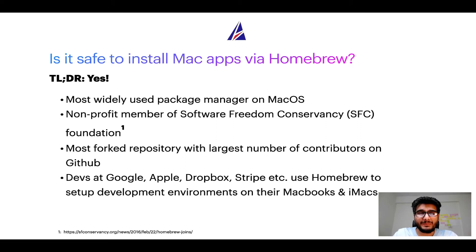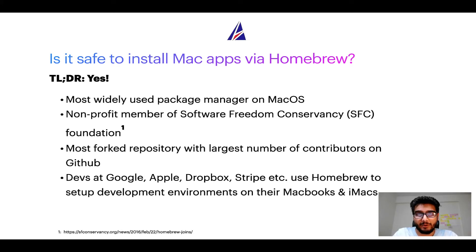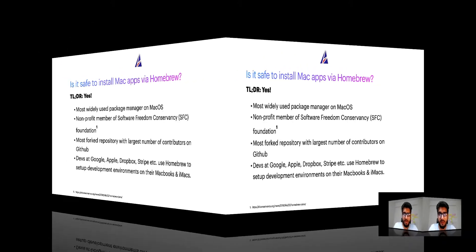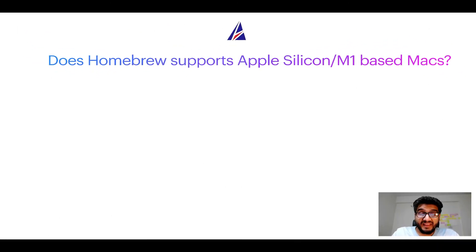Also, you might be surprised to know that Homebrew is the most forked project on GitHub and it has the largest number of contributors on its GitHub repository. Many devs at organizations like Google, Apple, Dropbox, Stripe, etc. use Homebrew to set up different development environments on their MacBooks and iMacs.